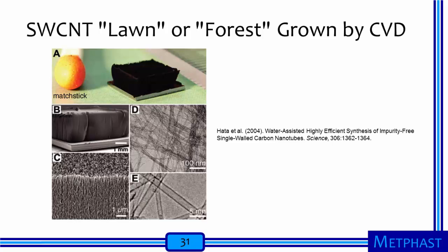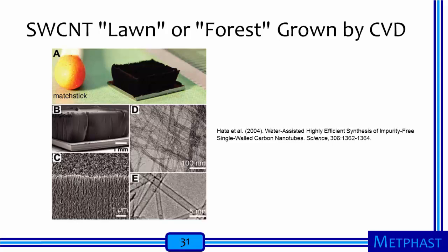Single-walled carbon nanotubes produced by chemical vapor deposition often grow like a lawn or forest. These images from Hatta and co-authors show these nanotubes viewed at different dimensional orders of magnitude — from the complete lawn in image A, through images B and C at the micrometer scale, through image D at a 100-nanometer scale, and finally at the nanometer scale in image E. These photos show how single-walled carbon nanotubes can be produced in large quantities for use.